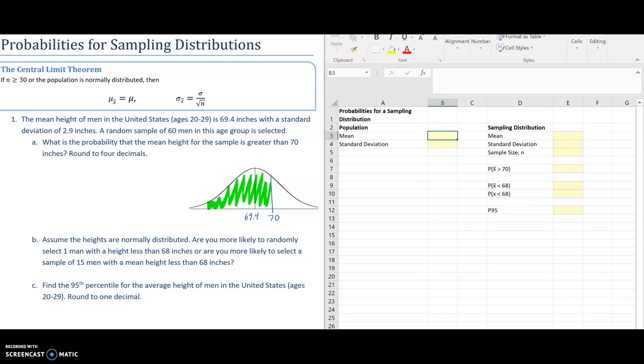Hey everybody, here is a video on how to calculate probabilities for sampling distributions using the Central Limit Theorem. A couple things to remember: I can only use the Central Limit Theorem if my sample size n is at least 30, or if I'm told that the population is already normally distributed.